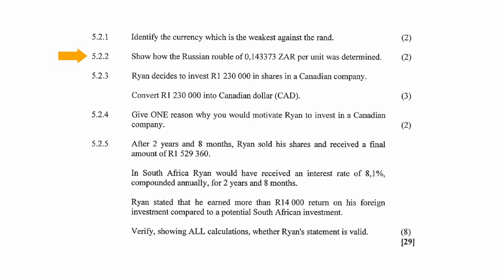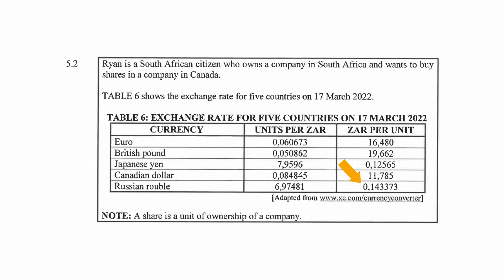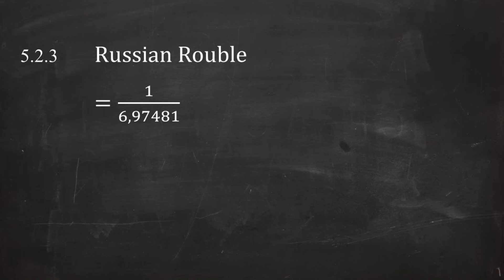In question 5.2.2, you have to show how the Russian ruble value of 0.143373 Rand per unit was determined. From Table 6, 1 Rand equals 6.97481 rubles, meaning the ruble is weaker than the Rand. To calculate 1 ruble in Rand: 1 divided by 6.97481 equals 0.143373 South African Rand per unit of ruble.